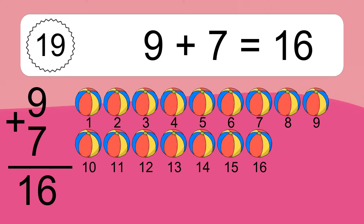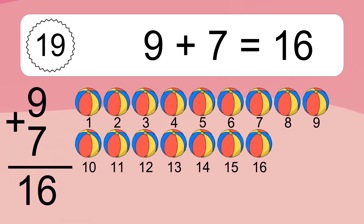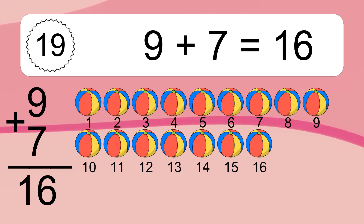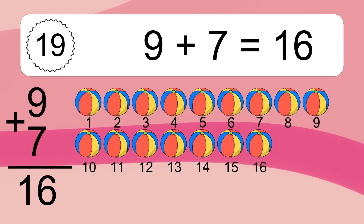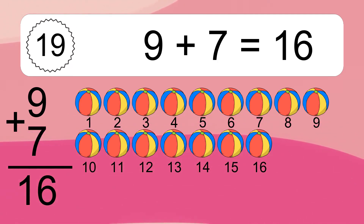9 plus 7 equals what? Let's count it: 1, 2, 3, 4, 5, 6, 7, 8, 9, 10, 11, 12, 13, 14, 15, 16.